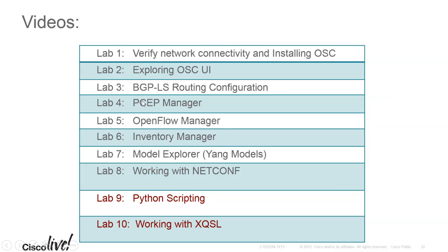With the PSAP Manager in the next lab, we'll be configuring LSP tunnels two or three different ways — dynamically using hop count and cost, then manually, and then deleting some — and you'll telnet into the routers to verify exactly what's going on. With the OpenFlow Manager lab, we spin up switches, create and delete flows, and see all that information through Wireshark. The Inventory Manager lab goes through the inventory manager portal to see what's connected, look at interface information and statistics.